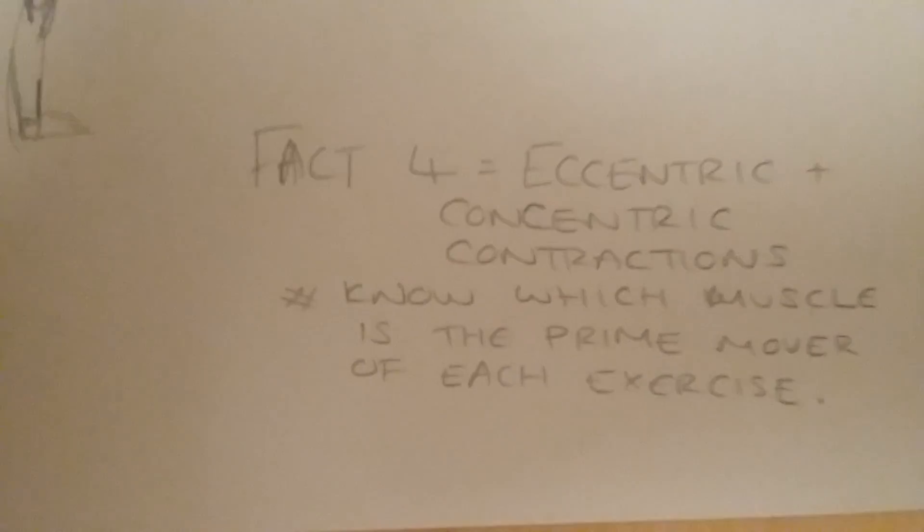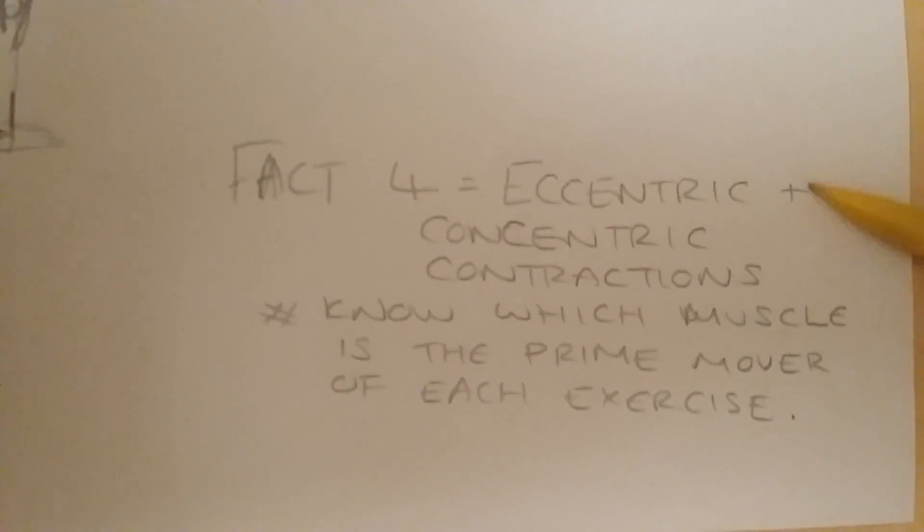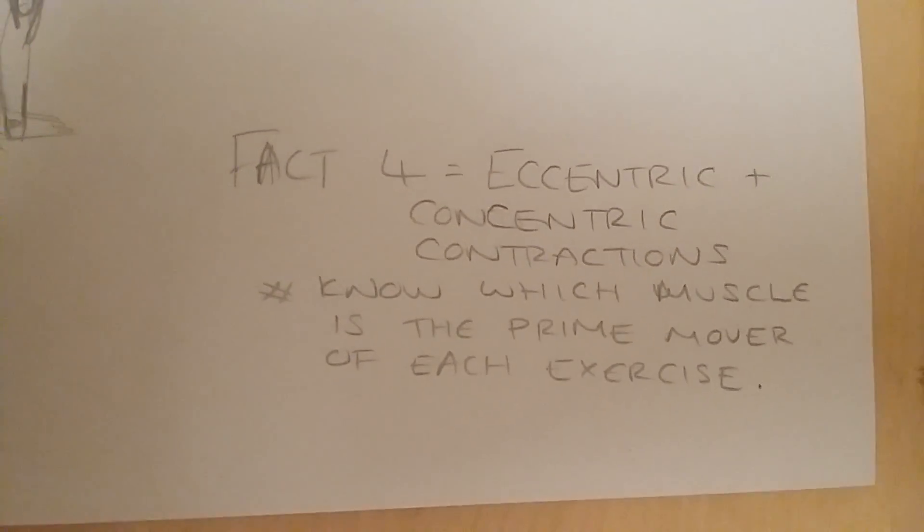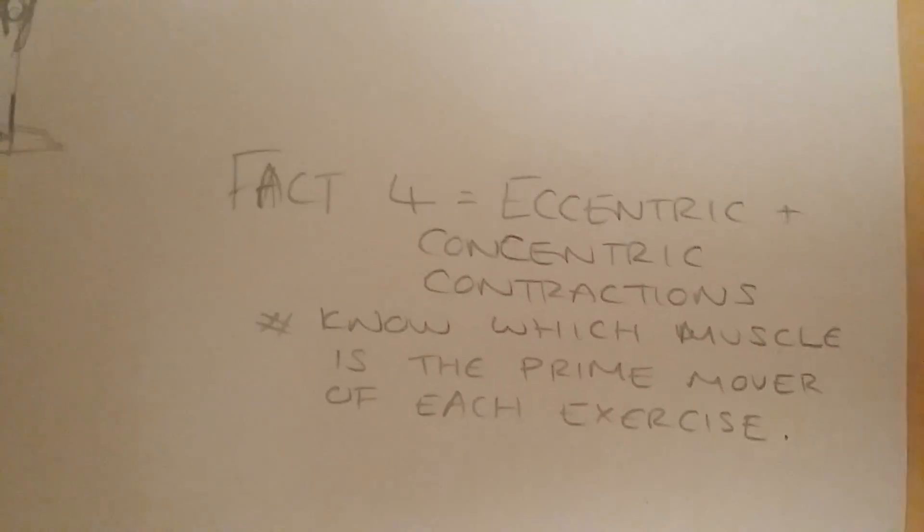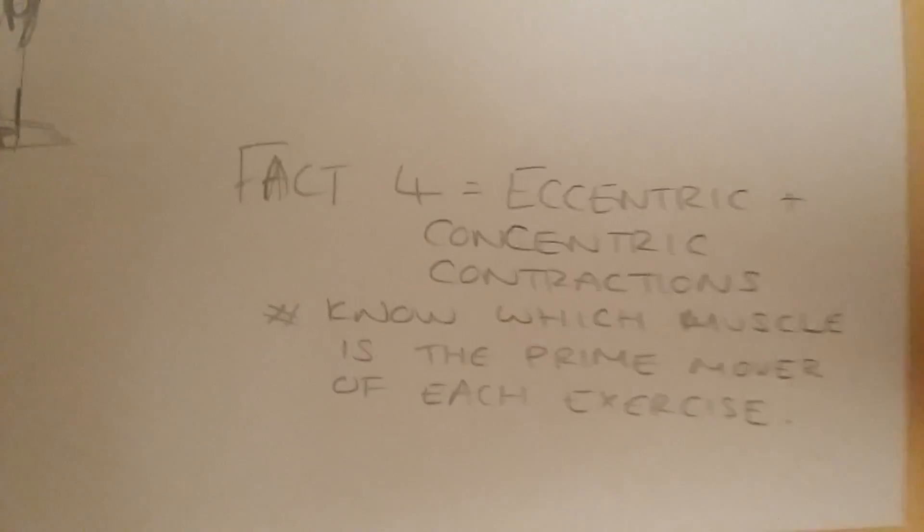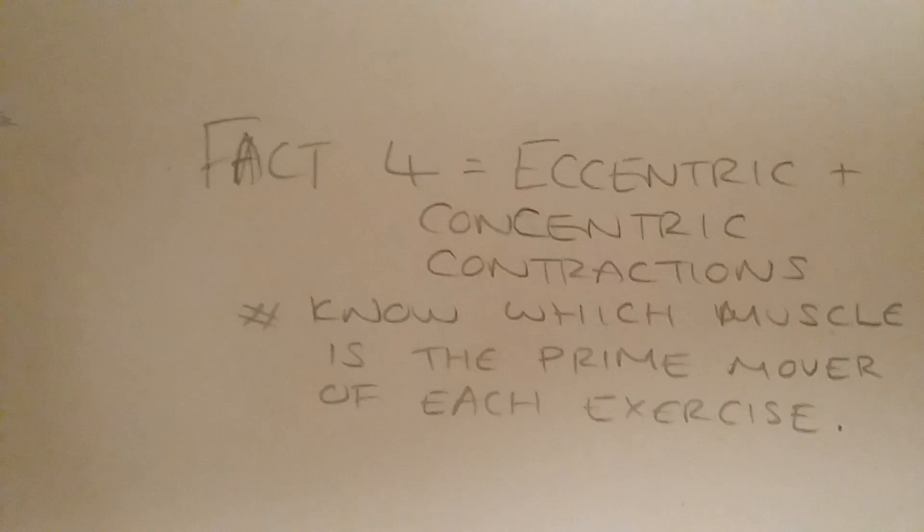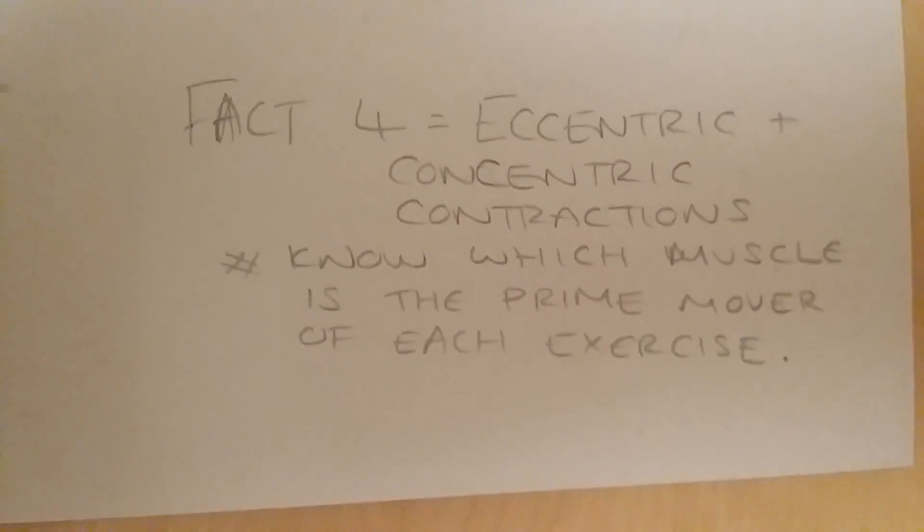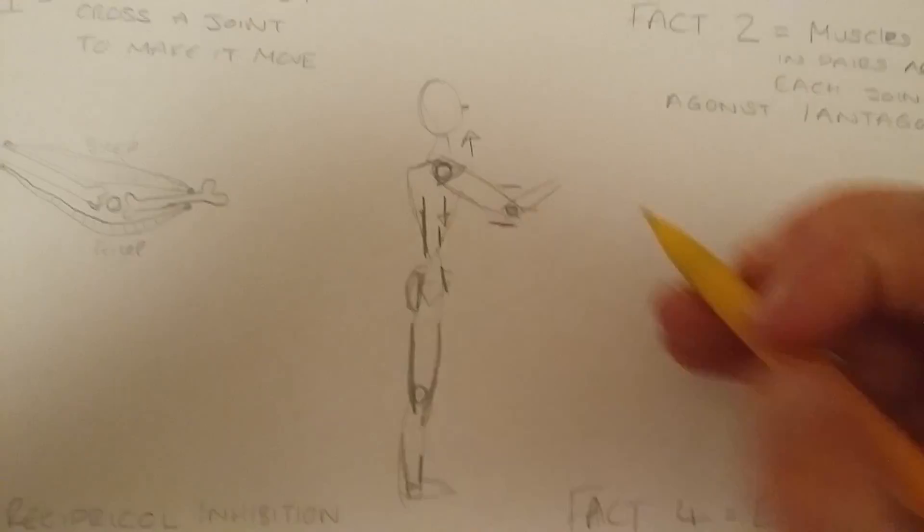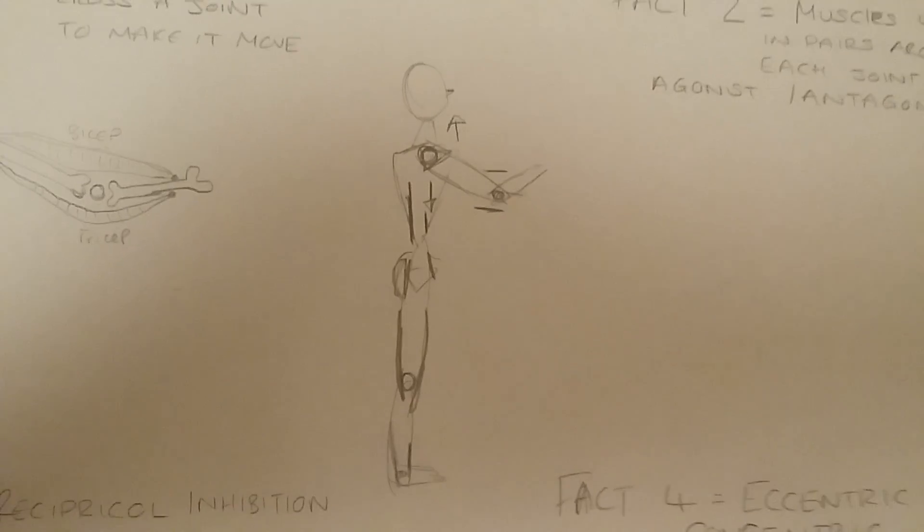Next one is fact four. Fact four is you need to know about eccentric and concentric contractions. So for this, it's important to now consider what muscle is the prime mover of every exercise you do. So let's go back to this lovely little drawing that we had. Let's stick with bicep to start off with. It's the easiest one to consider.